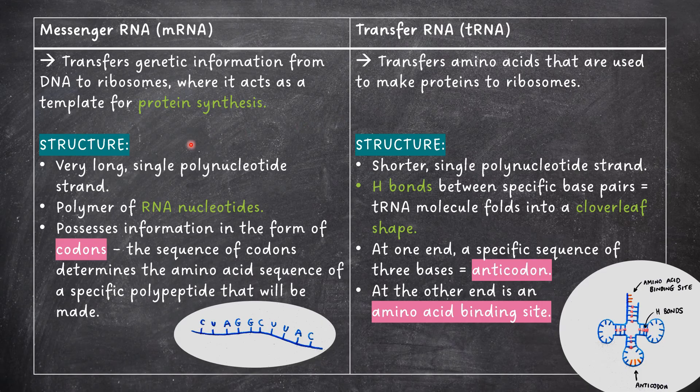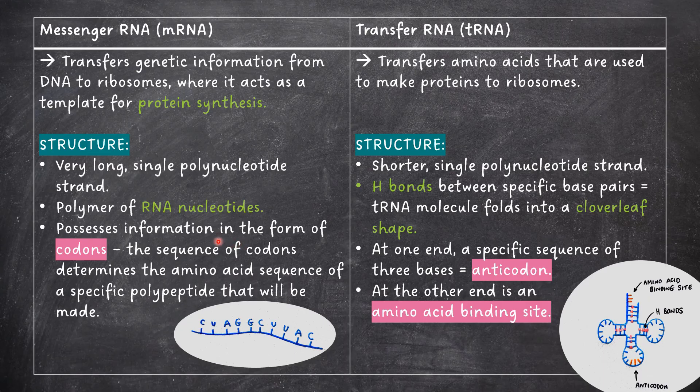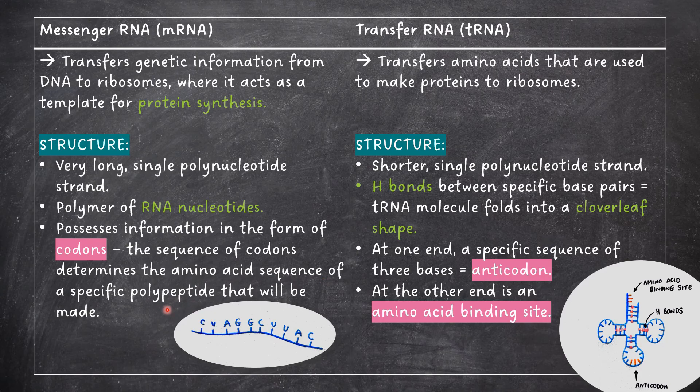mRNA is a very long single polynucleotide strand. It's a polymer of RNA nucleotides. It possesses information in the form of codons. It is the sequence of codons that determines the amino acid sequence of a specific polypeptide that will be made.